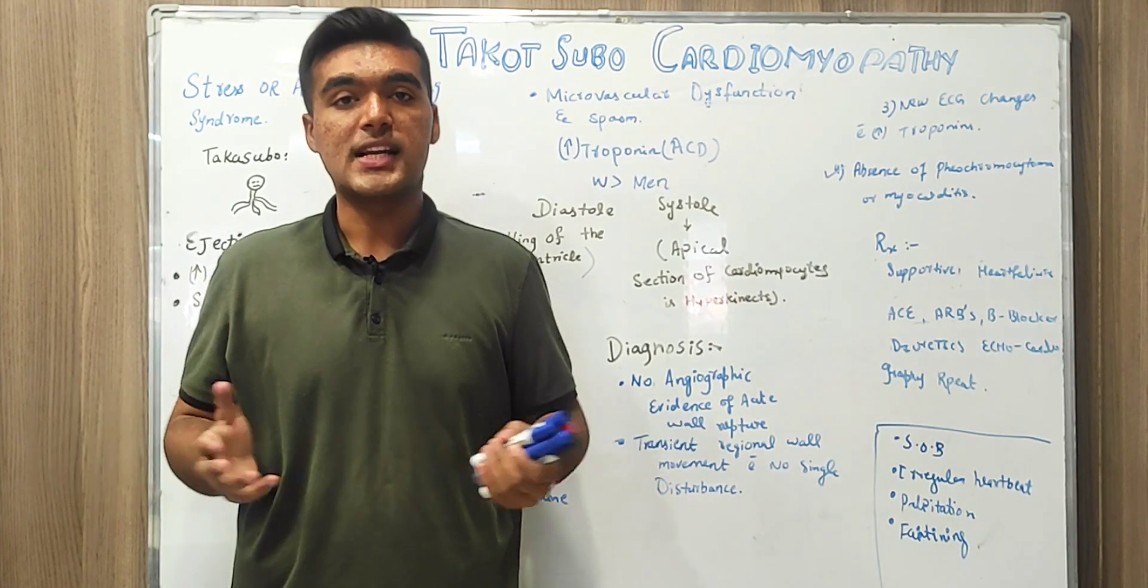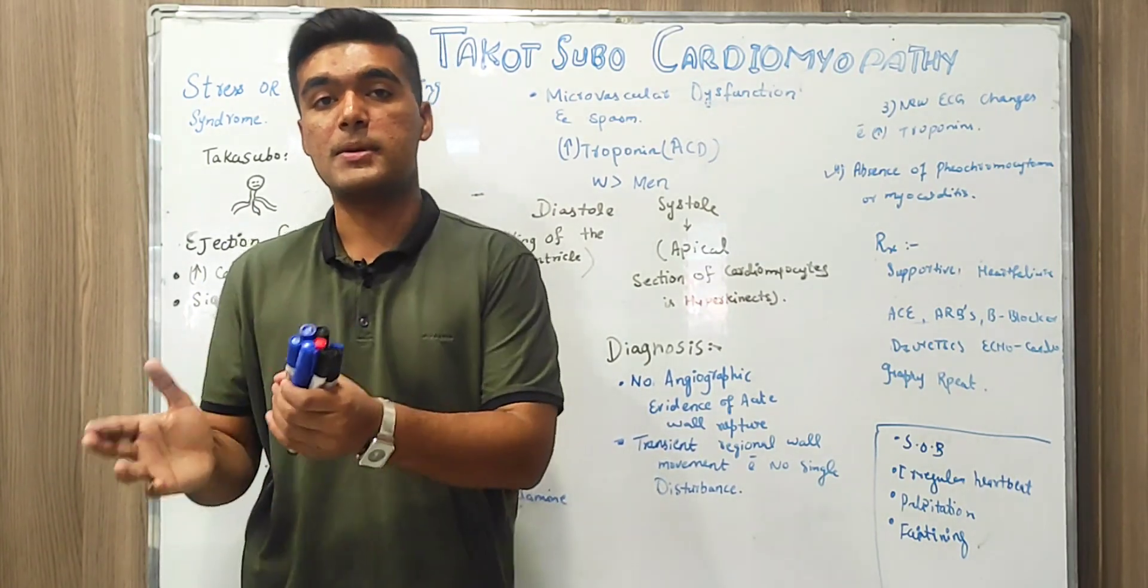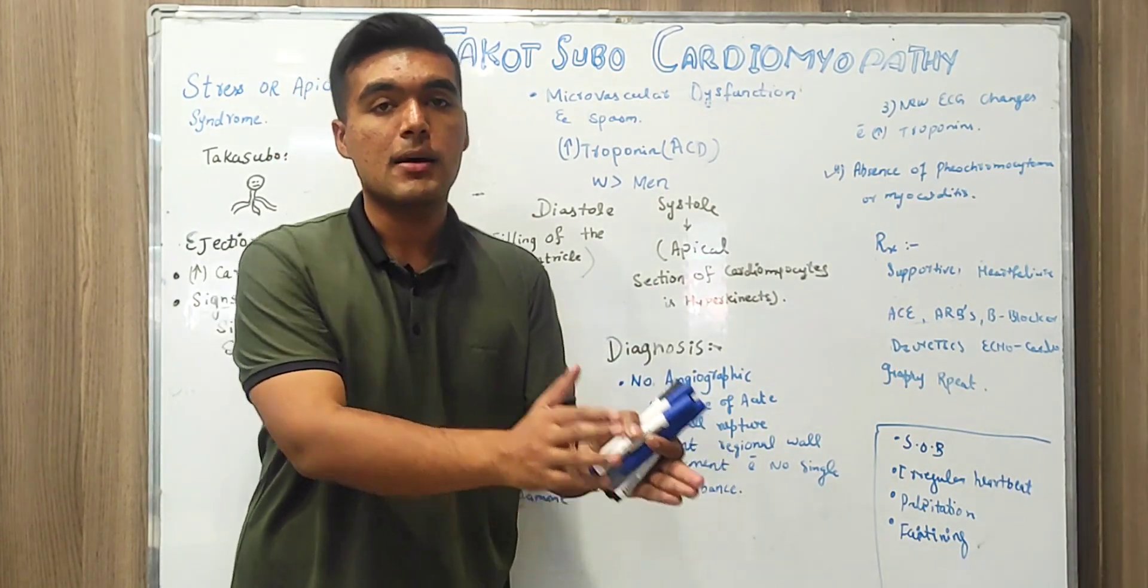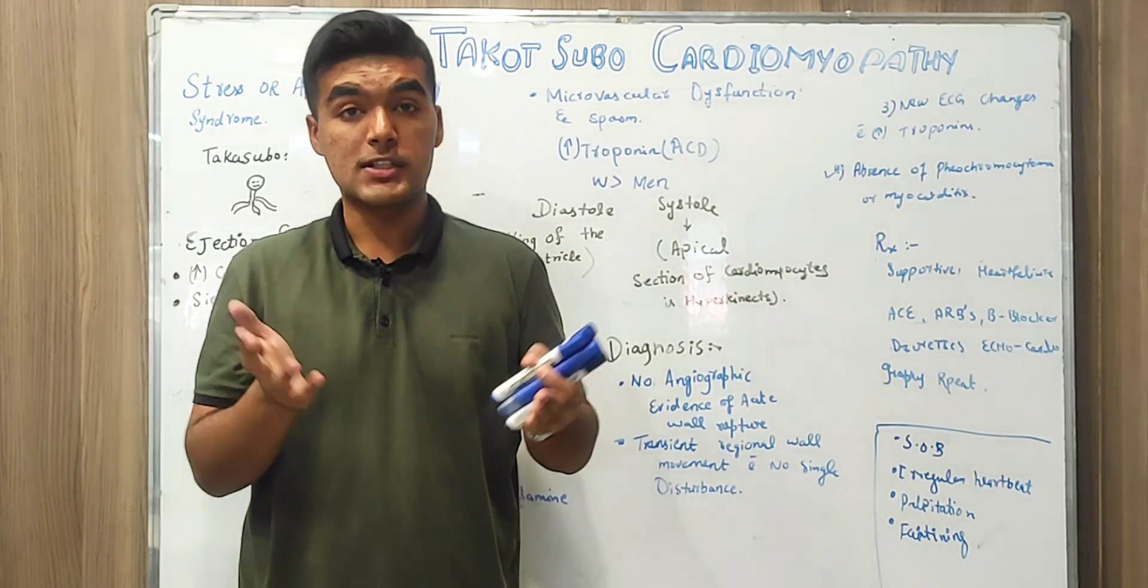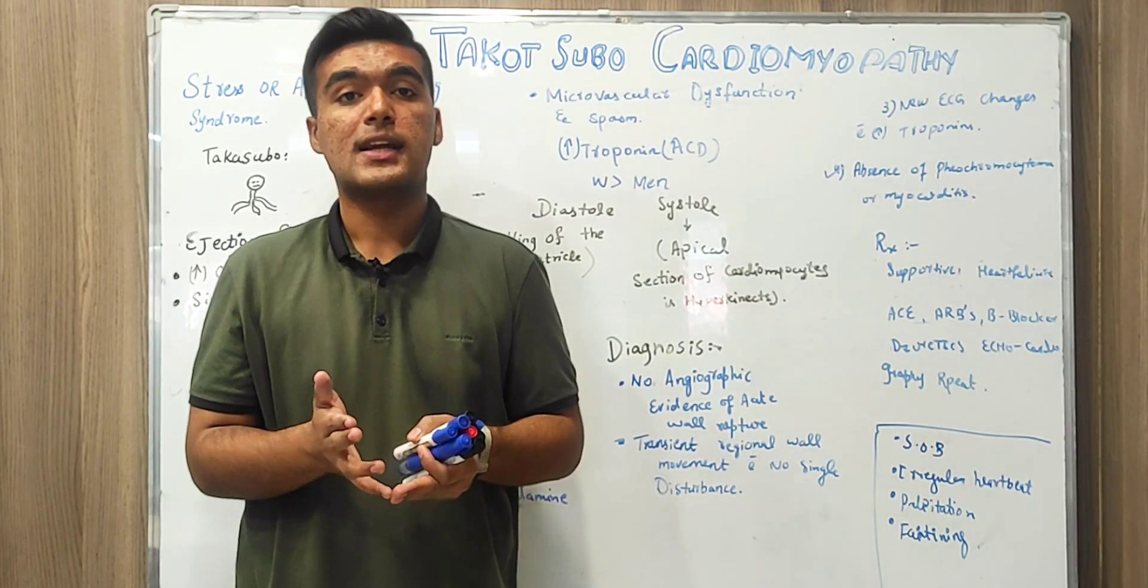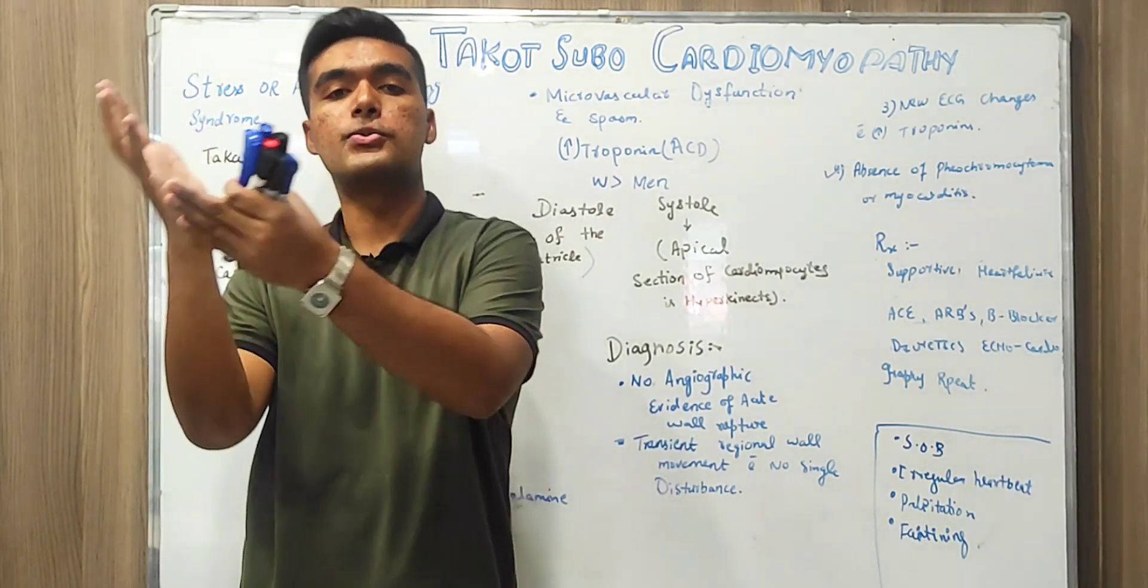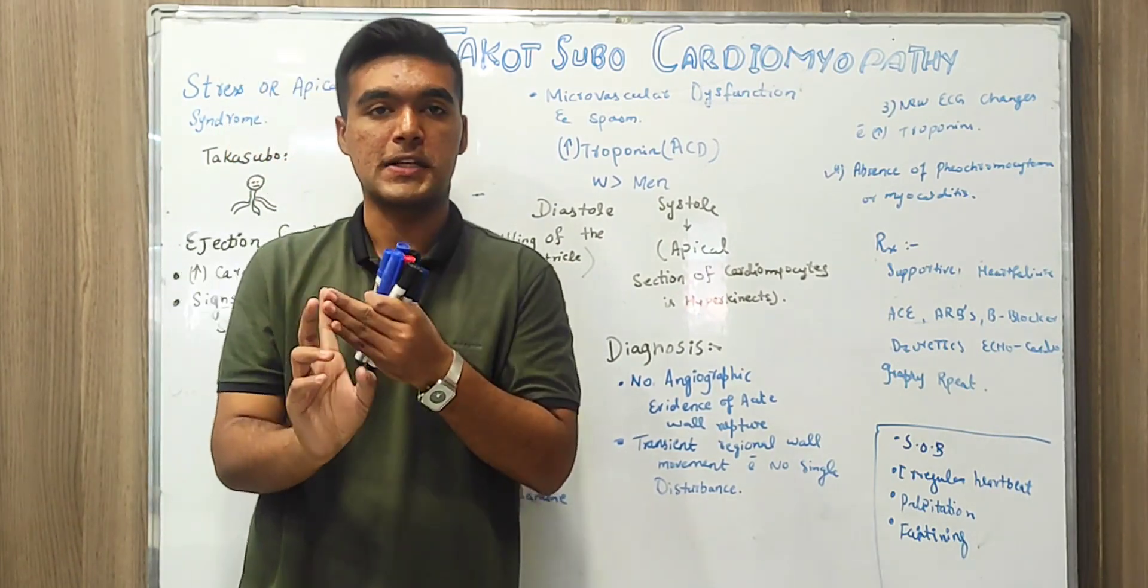It's a condition relevant to stress, relevant to apical ballooning syndrome. Stress might be physical, might be mental stress, and apical ballooning syndrome is a reversible condition of cardiomyocyte damage that also occurs due to stress. The major important factor is stress.